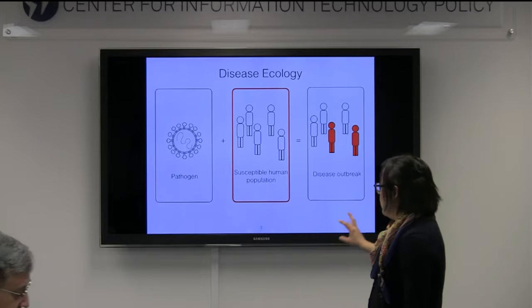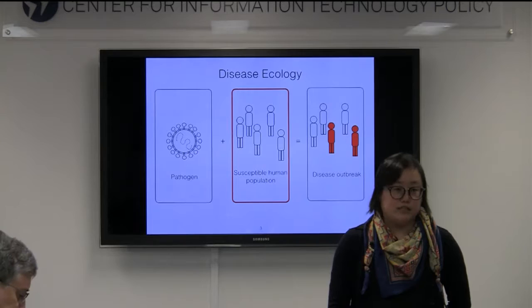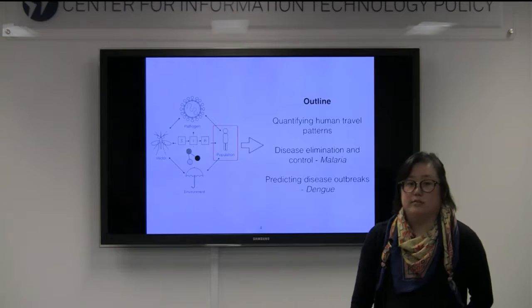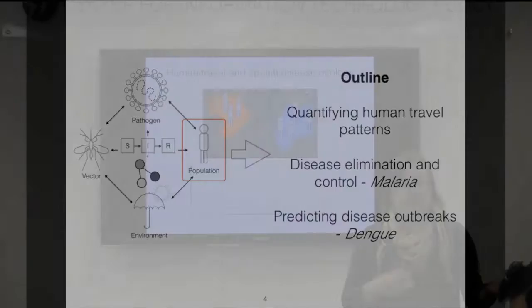The human population has been less studied, partially due to a lack of data availability. That's the part that I'm really interested in thinking about — how can we better understand human population dynamics that can better inform our disease models. Today I'm going to talk a little bit about some of the work looking at quantifying human travel patterns related to spatial disease ecology.